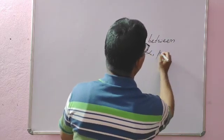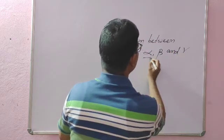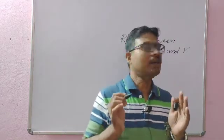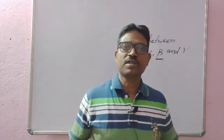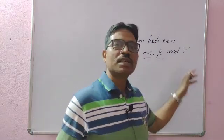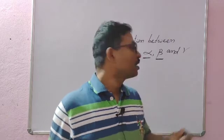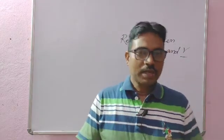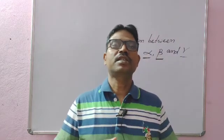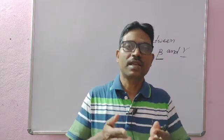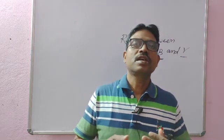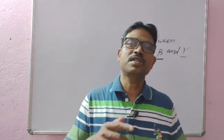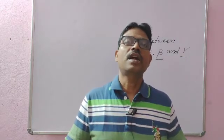First we should know what is the meaning of alpha. Alpha means coefficient of linear expansion. Then beta is coefficient of area expansion — you can say it is superficial expansion. Gamma means the coefficient of volume expansion — you can say it is cubical expansion. These are connected with thermal expansion. When you apply heat on a conductor, there is an increase in length, increase in area, or increase in volume — that means there is an increase in size on heating. This is known as thermal expansion, and that expansion is of three types: linear expansion, area expansion, and volume expansion.